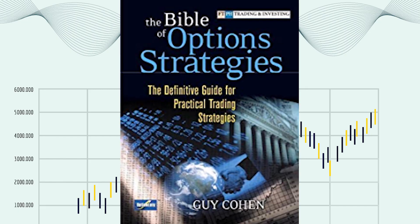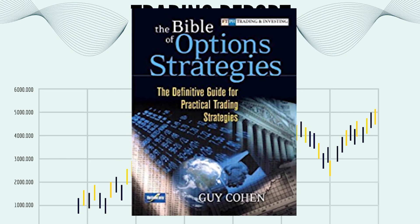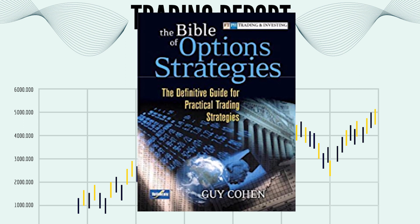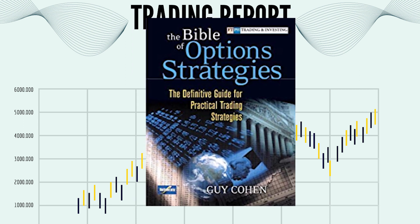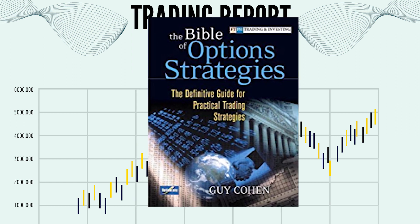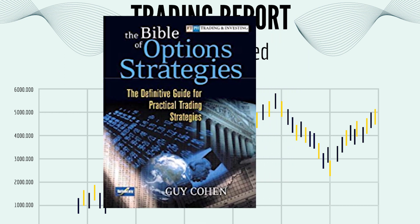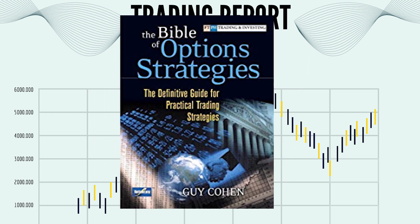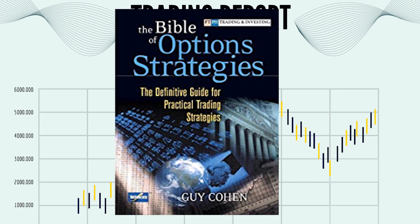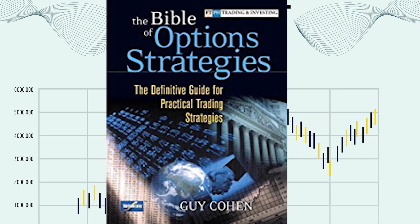The Bible of Options Strategies by Guy Cohen is a comprehensive guide for traders, offering practical strategies for successful options trading. It covers a wide range of topics, including basic and advanced options concepts, risk management, and trading psychology. The book is designed for both novice and experienced traders looking to improve their understanding of options trading.